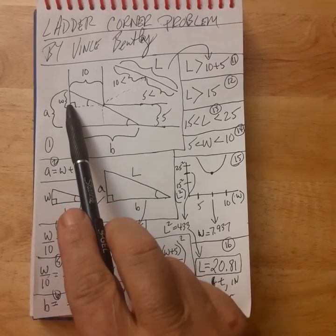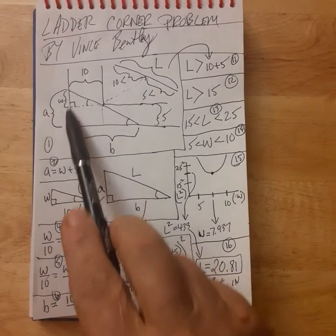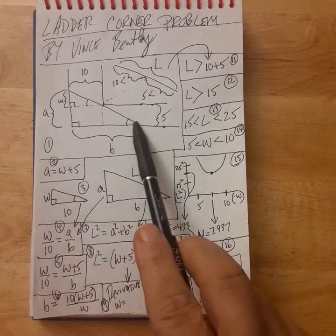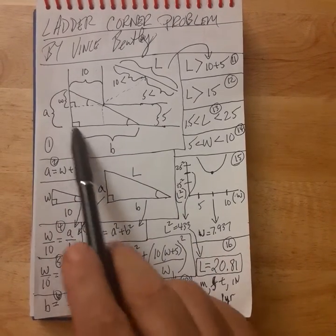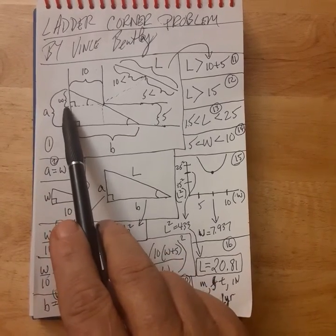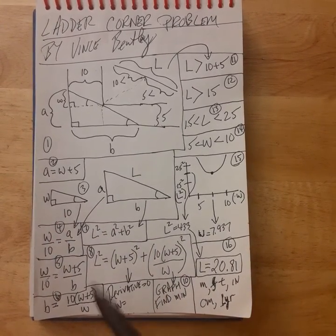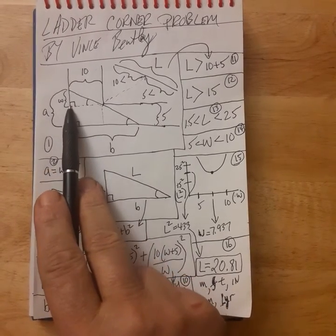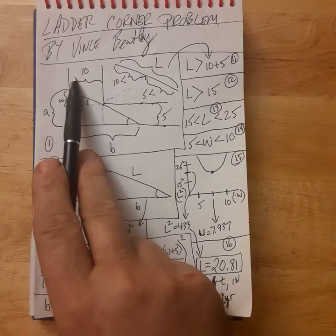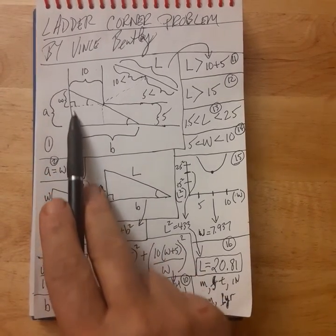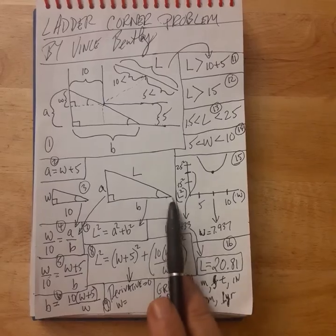We're going to define some variables. The width of one hallway is 10 and the other is 5. We define w as the length along one side, and the triangle that the ladder and the two walls make will have sides labeled a, w, and b.